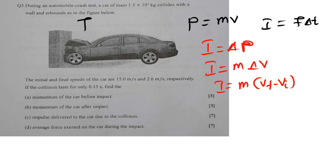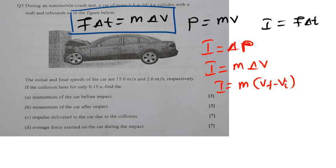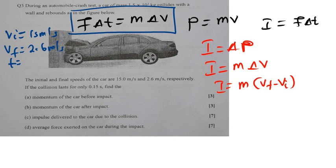Another formula to take note of: since impulse is given by force times change in time, and momentum is mass times change in velocity, the relationship F·Δt = m·Δv is very, very important. As long as I've been given this information, I can find anything — velocity, force, or time. From this question, the initial velocity is 15 meters per second, the final velocity is 2.6 meters per second, and the time is 0.15 seconds.